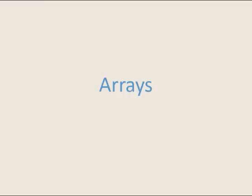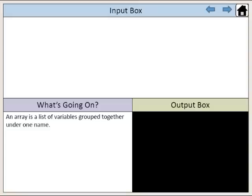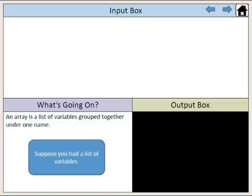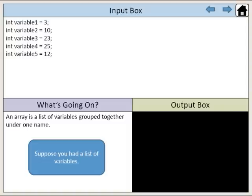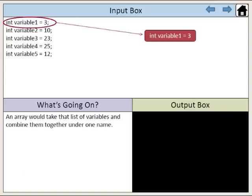C++ Arrays. An array is a list of variables grouped together under one name. Suppose you had a list of variables — an array would take that list of variables and combine them together under one name.